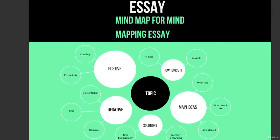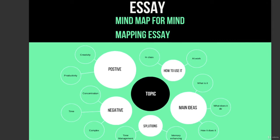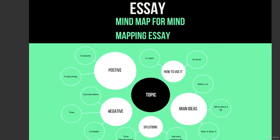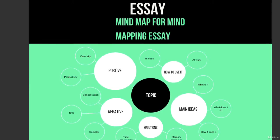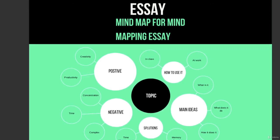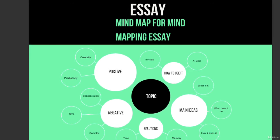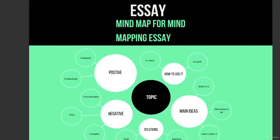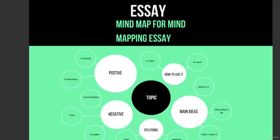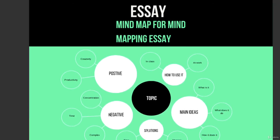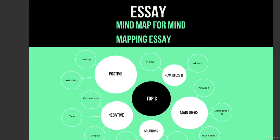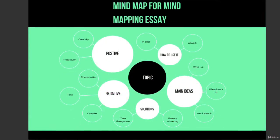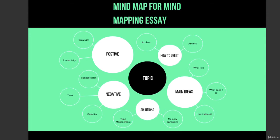Then you figure out what solutions you have. For example: eat five meals a day, keep track of your macros, and eat certain foods that have a lot of protein in them. Those are some solutions. What are the main ideas? For example, one in every three people that go to the gym use supplements. Another study said supplements are important, another said they're bad, another said they're good. You add all these main ideas at the beginning.